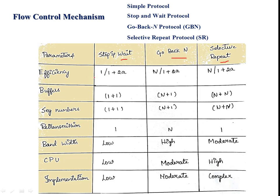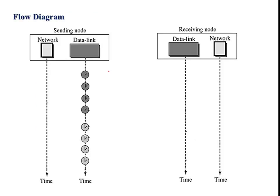Here is a comparison for all three protocols. The first parameter is efficiency. The efficiency of stop-and-wait protocol is 1 divided by (1 + 2a), where 2a is the ratio between propagation delay and transmission delay. In stop-and-wait, only one packet is actually transmitted, and until the acknowledgement is received for that packet, the next packet will not be processed.